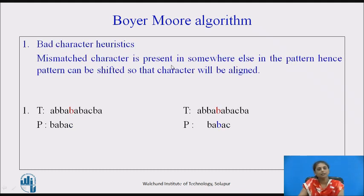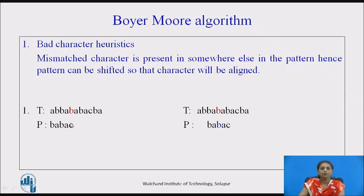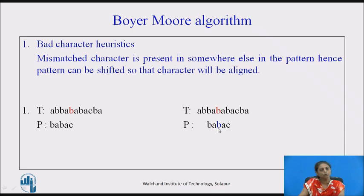Bad character heuristics: a mismatch character is present somewhere else in the pattern, and hence that character should be aligned to the matching character in the pattern. For example, comparing from right to left, B is mismatched. Since B is present in the pattern, we align the text B to the pattern B, shifting the pattern right by 2 characters. This is called bad character heuristics.